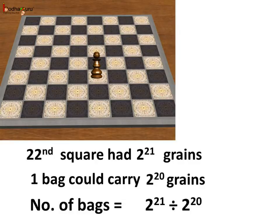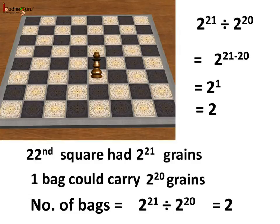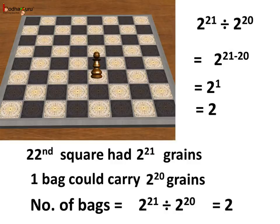What about the twenty-second square? The twenty-second square had 2 to the power 21 grains, and we assumed one bag could carry 2 to the power 20 grains, which means the number of bags required would be 2 to the power 21 divided by 2 to the power 20. This is equal to 2 to the power 21 minus 20, which is equal to 2 to the power 1, and we know this is equal to 2. So for the twenty-second square, the bags required is equal to 2.